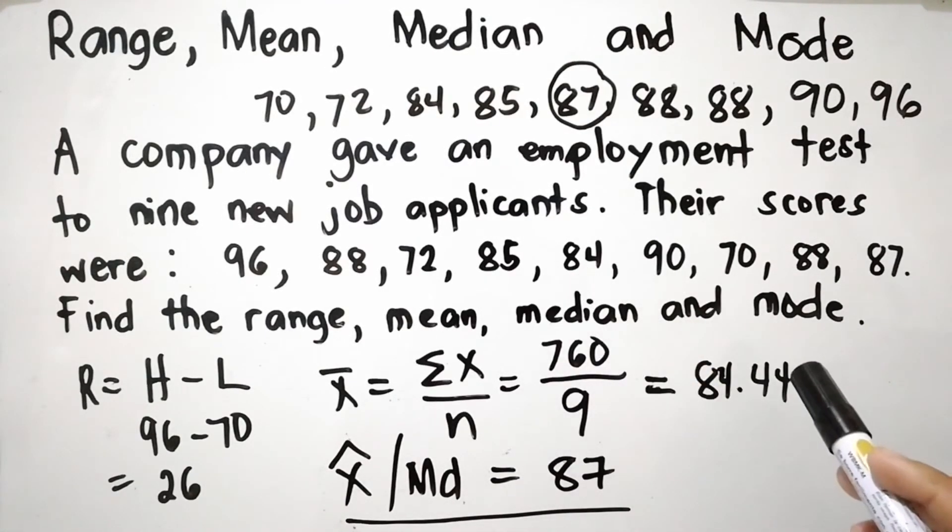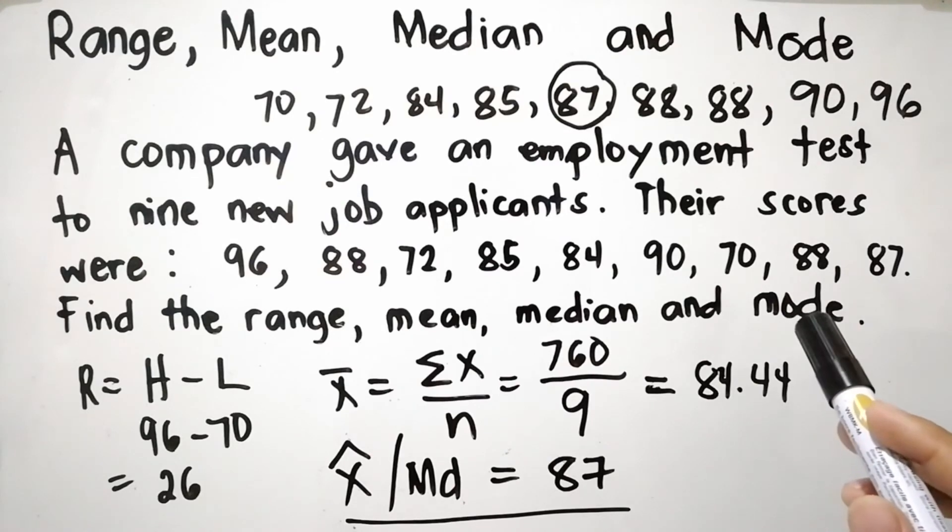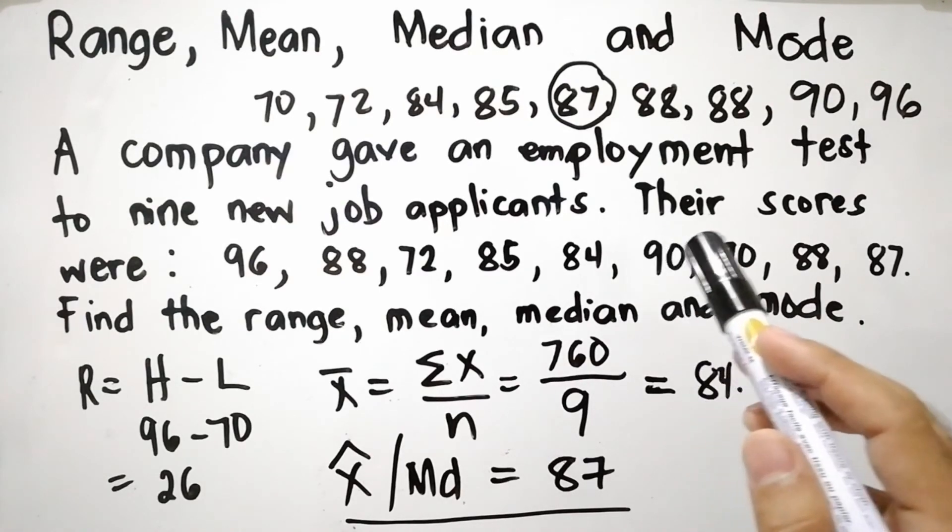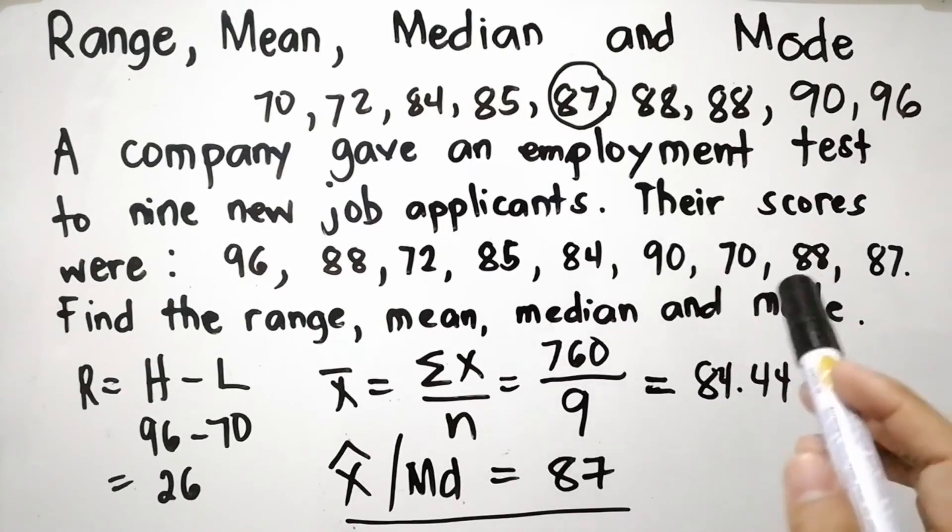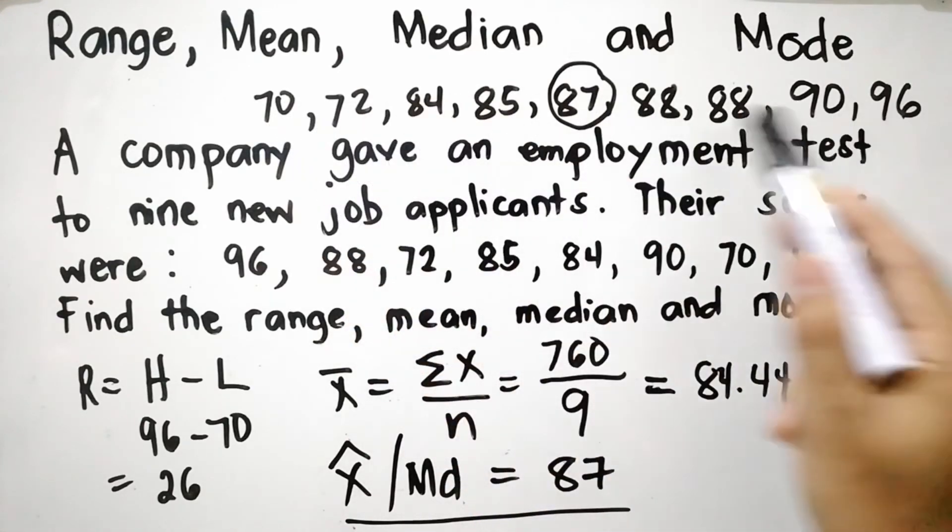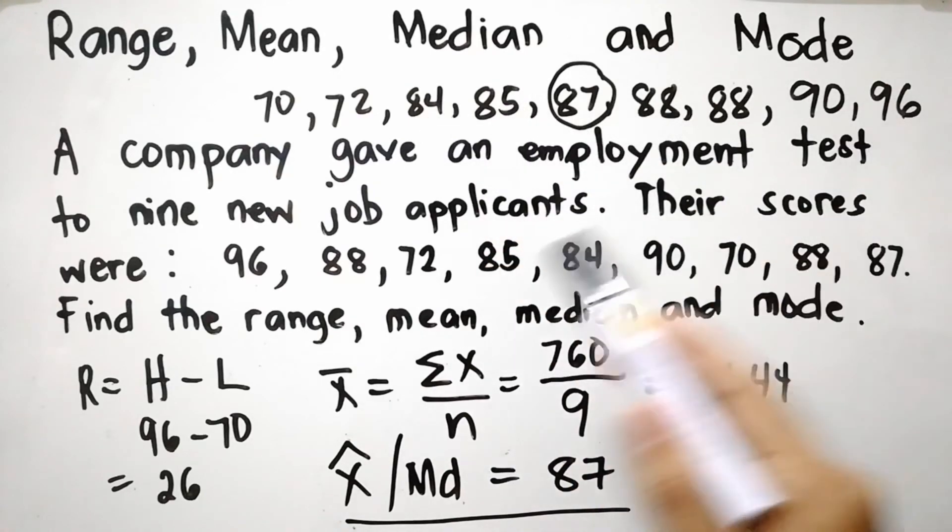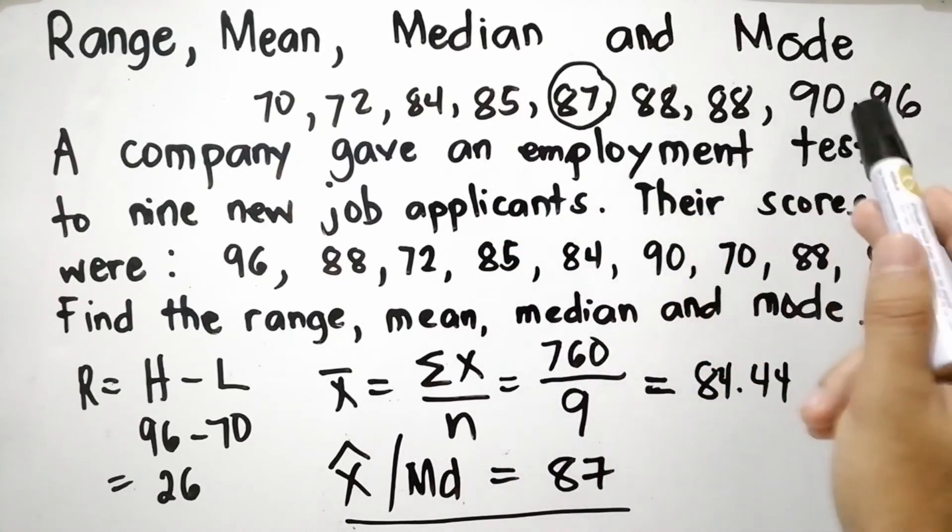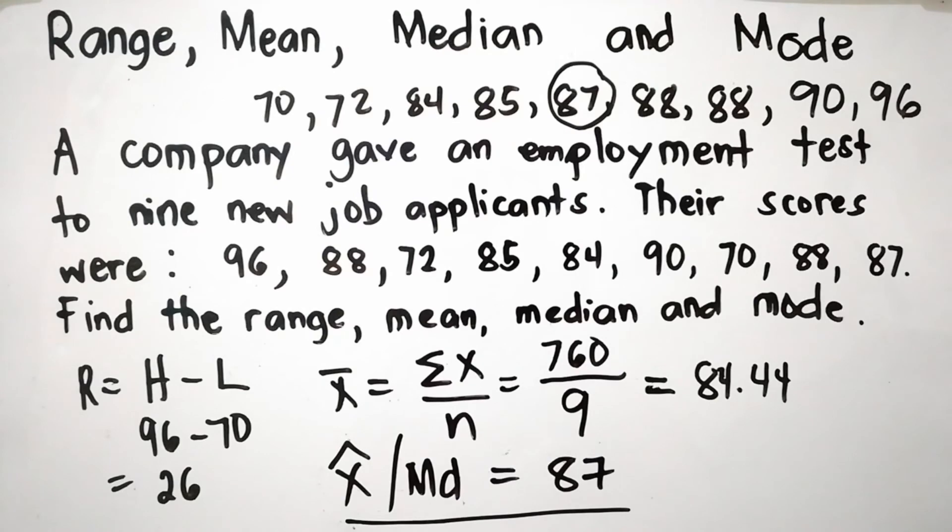So now, let us find the mode. The mode is the most frequent value, or the value that occurs the most number of times. If you are going to observe the given data, the most frequent value is 88.